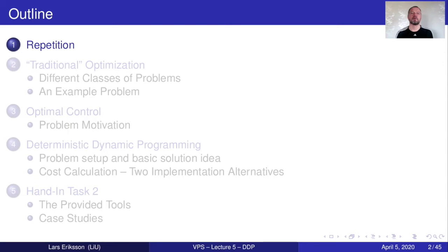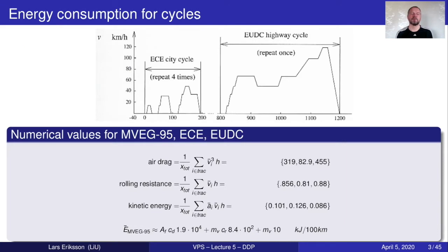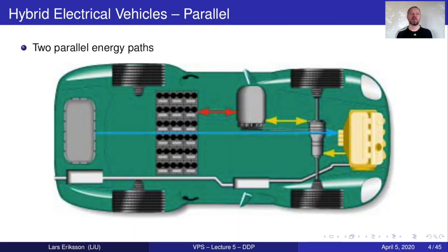But before going into that we will start a little bit with the repetition. The repetition is done with the forgetting factor so it's getting less and less of what I said the first lecture but we still have a little bit from the first lecture discussing the cycles and the analysis of the cycles that you're currently working on implementing analysis software for. Last lecture we talked about hybrid electric vehicles and the components in it.